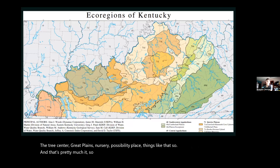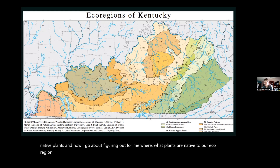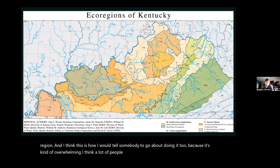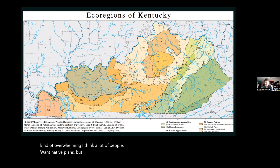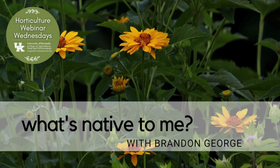That's pretty much what I wanted to talk to you about regarding native plants and how I go about figuring out what plants are native to our ecoregion. I think a lot of people want native plants, but I try to tell them that you have to know what that means first — realizing that there are geographic boundaries that make sense for your area, and you need to be aware of that first.